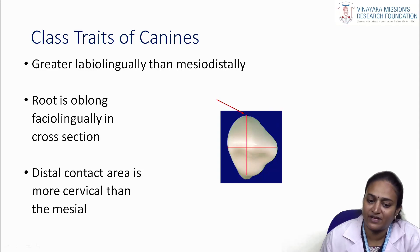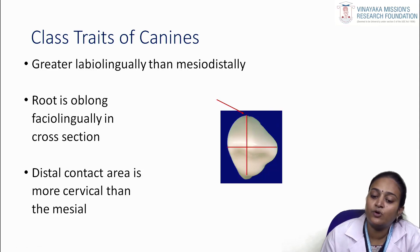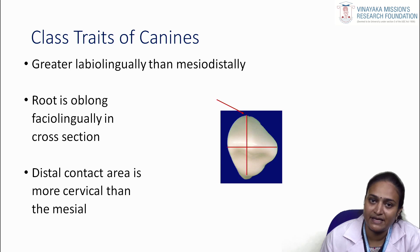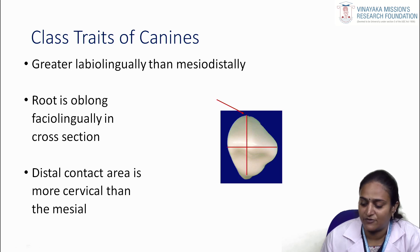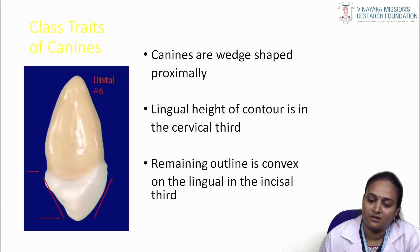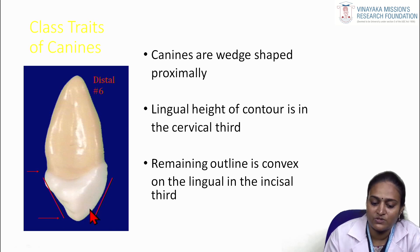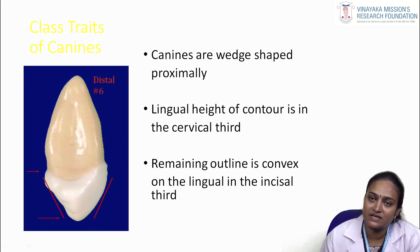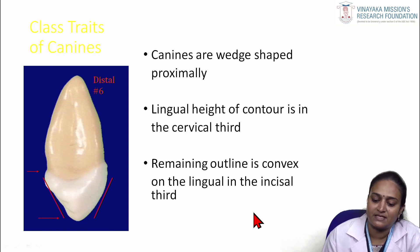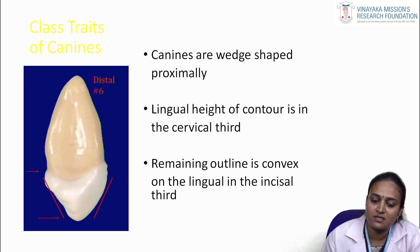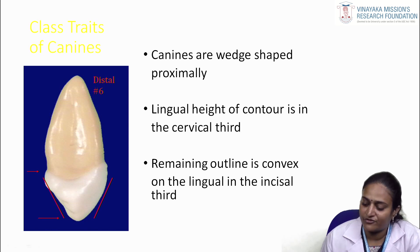Coming to the classic triads: the canine is greater labiolingually than mesiodistally. The root is oblong faciolingually in cross section, and the distal contact area is more cervical than the mesial surface. From the proximal area, the canines are wedge-shaped proximally. The lingual height of contour is in the cervical third, and the remaining outline is convex on the lingual surface in the incisal third area.